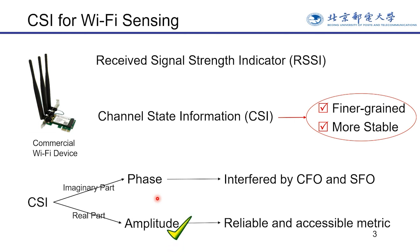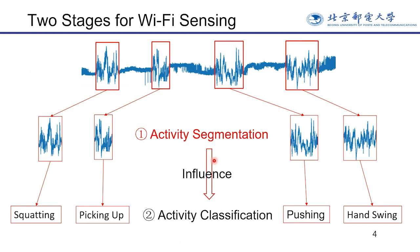CSI amplitude is a commonly used feature for Wi-Fi sensing. Most Wi-Fi sensing applications are realized for activity recognition, which includes activity segmentation and classification. A CSI stream collected from the Wi-Fi receiver must be segmented first to extract the useful activity parts, then the classifier can classify them into specific activities. The performance of classification is influenced by segmentation. In this article we focus on how to improve the performance and practicability of activity segmentation.